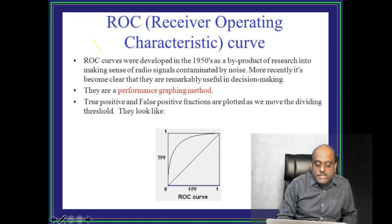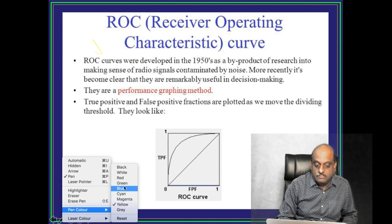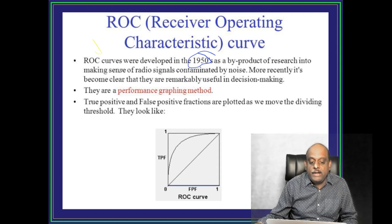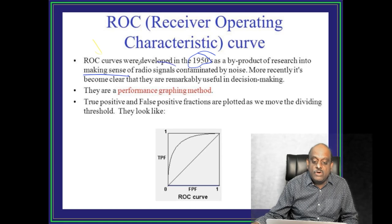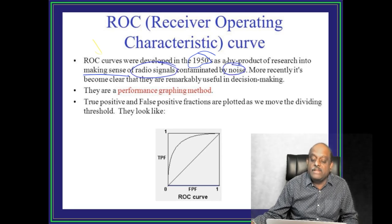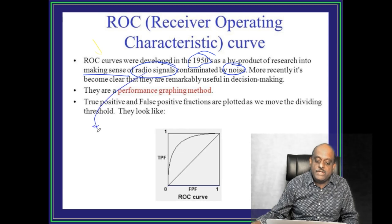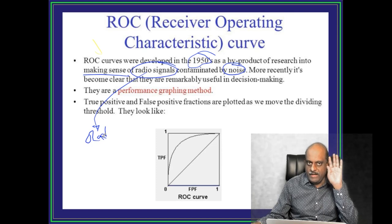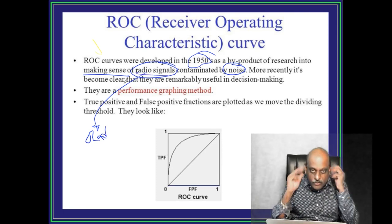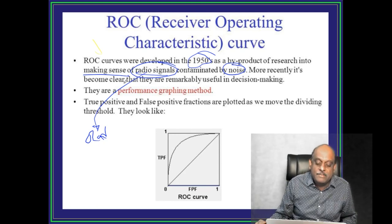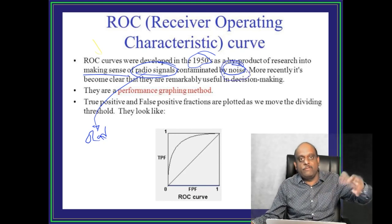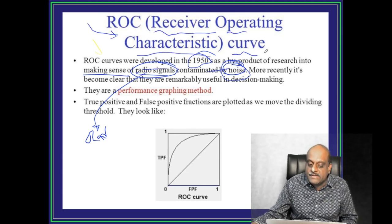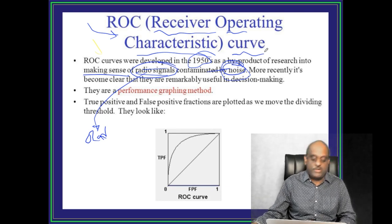Note of the ROC curves, they are developed in 1950s as a byproduct of the research making sensor to the radio signals which are being contaminated with noise. Originally this radio signal Adolf Hitler is attacking, Adolf Hitler is attacking radio signal British intelligence military intelligence, it is contaminated with a lot of noise. So to differentiate the two they have created receiver operating characteristic curve is what you have to understand.